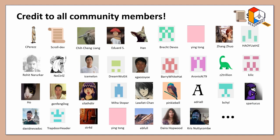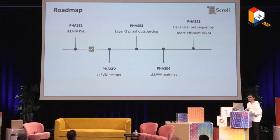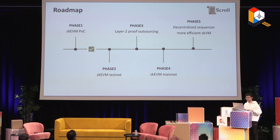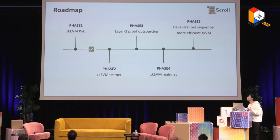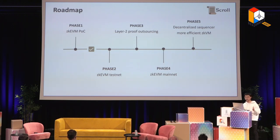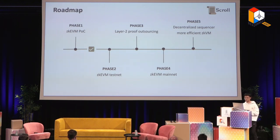That's basically all the contents related to the tech part. Our roadmap is: in phase one, we will have a ZK EVM proof of concept. In phase two, we will have a ZK EVM testnet supporting some smart contracts. In phase three, we will outsource proof generation to a broader community — that's layer two proof outsourcing. In phase four, there will be ZK EVM mainnet with auditing and proof optimizations. In the final phase, we also decentralize our sequencer and think about ways to go beyond EVM. While ZK VM is definitely more efficient, for migrating what's happening on EVM layer one, you really want ZK EVM in the first place.